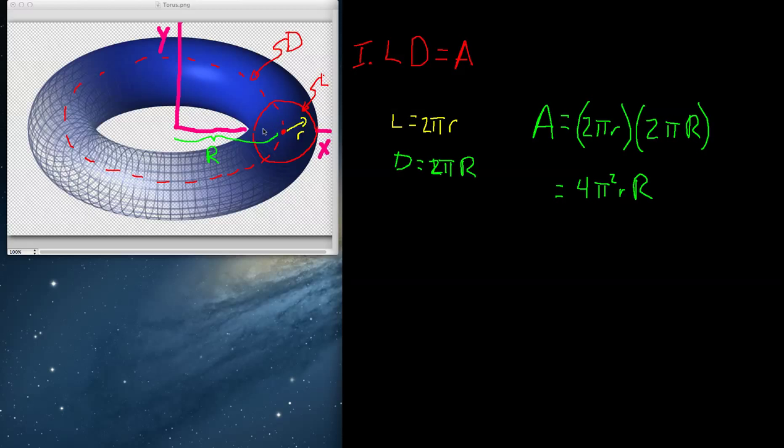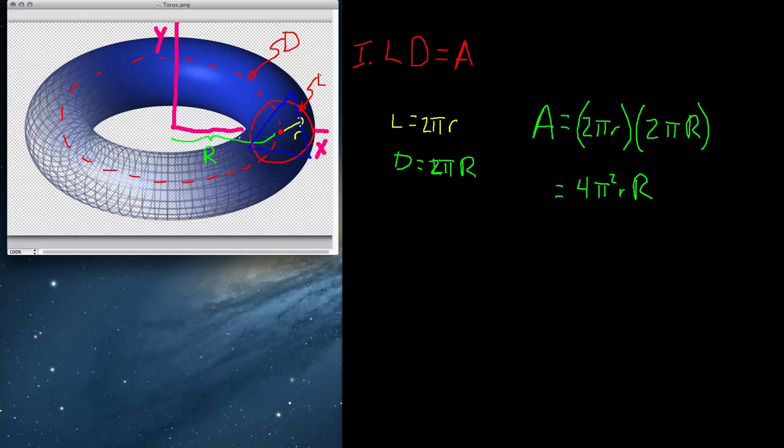Now, the cool thing about this is we could have changed the rules. We could have said instead of a circle, let's take a triangle cross section and rotate it around this axis of rotation. No problem. Find out the distance of each side of the triangle, find out where the centroid is, and you can do that. Multiply the distance the centroid travels by the overall length of the shape that's being rotated. You have your area of the torus.